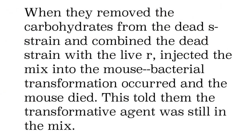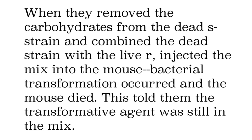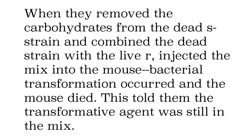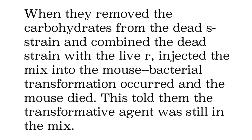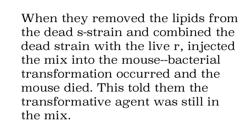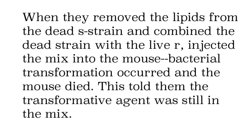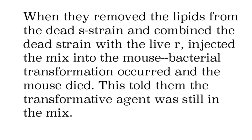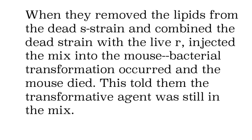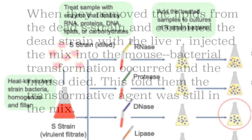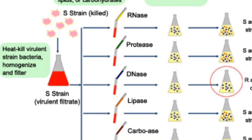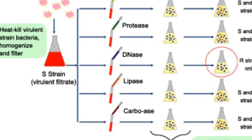When he removed carbohydrates from the dead S-strain and combined it with the R-strain and put it in the mouse, transformation still happened. So he knew carbohydrates were not the transformative agent — if they were, removing them would have stopped it. Then he removed lipids and did the same thing, and transformation still happened. So lipids were not the transformative agent either. He pretty much expected that — he didn't think it was lipids or carbohydrates, but he had to eliminate them as possibilities.